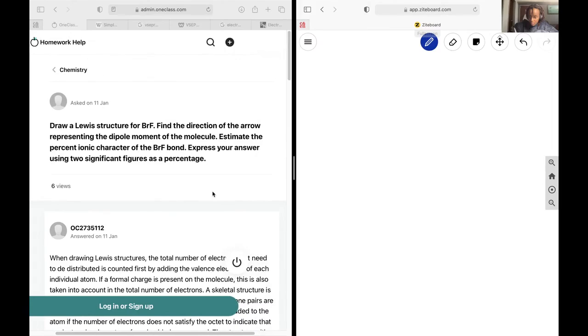Next up, I would like to draw the Lewis structure for BrF, find the direction of the arrow representing the dipole moment of the molecule, estimate the percent ionic character of the BrF bond, and express your answer using two significant figures as a percentage.